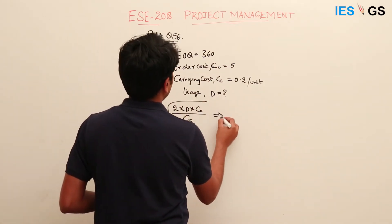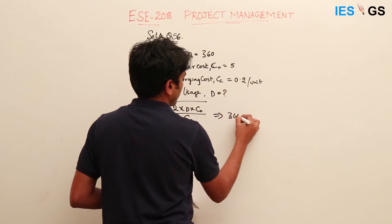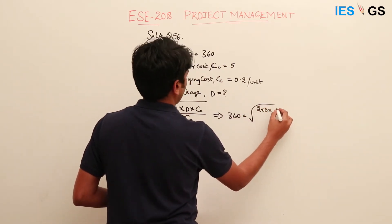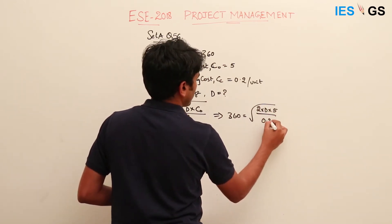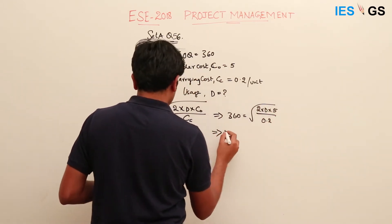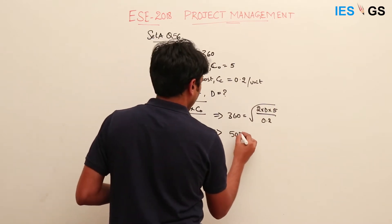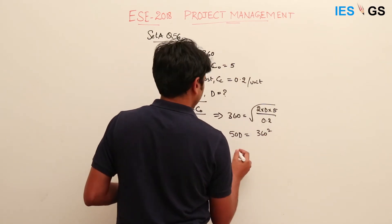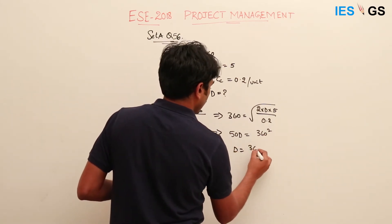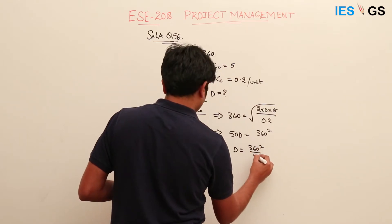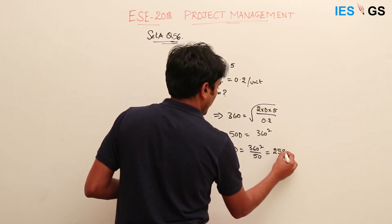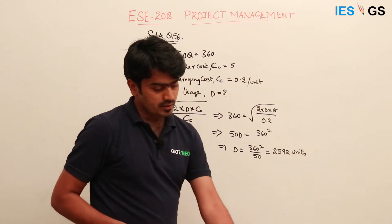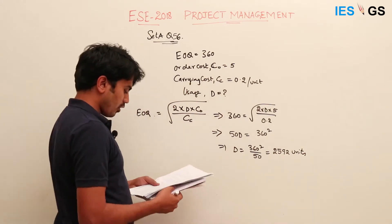Substituting the EOQ values: 360 = √(2 × D × 5 / 0.2), which simplifies to √(50D). Squaring both sides, 360² = 50D, so D = 360² / 50, which comes to 2592 units. This is given as option B — 2592 is the usage for that period.